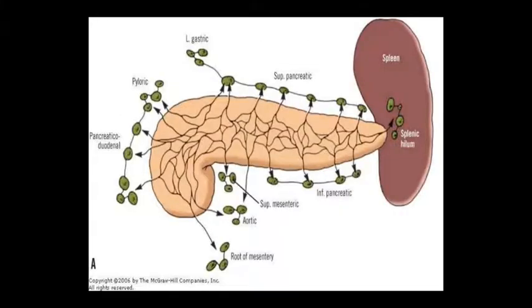Here you can see all the nodes clearly in the diagram. Taking the names: superior, pyloric, left gastric, pancreaticoduodenal, root of mesenteric, aortic, superior mesenteric, and inferior pancreatic nodes.